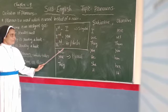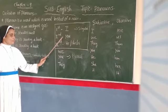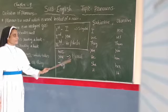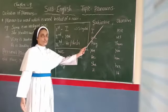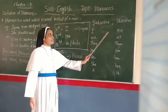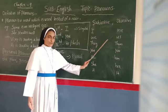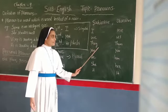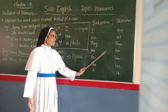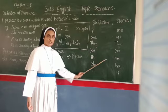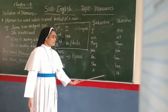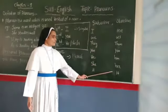Plural: 'I' becomes 'we,' 'you' remains 'you,' 'he/she' becomes 'they.' When subjective pronouns change into objective pronouns: 'I' changes into 'me,' 'we' changes into 'us,' 'they' changes into 'them.' 'You' — there is no change. 'He' changes into 'him,' 'she' changes into 'her,' and 'it' has no change.